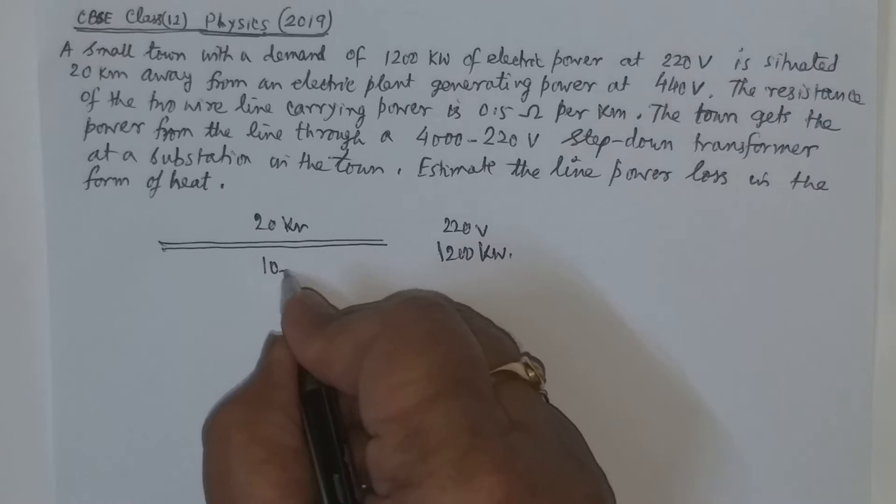A small town with a demand of 1200 kilowatts of electrical power at 220 volts is situated 20 kilometers away from an electric plant generating power at 440 volts. The resistance of the two-wire line carrying power is 0.5 ohms per kilometer, so 0.5 times 20 equals 10 ohms combined resistance of these transmission lines.